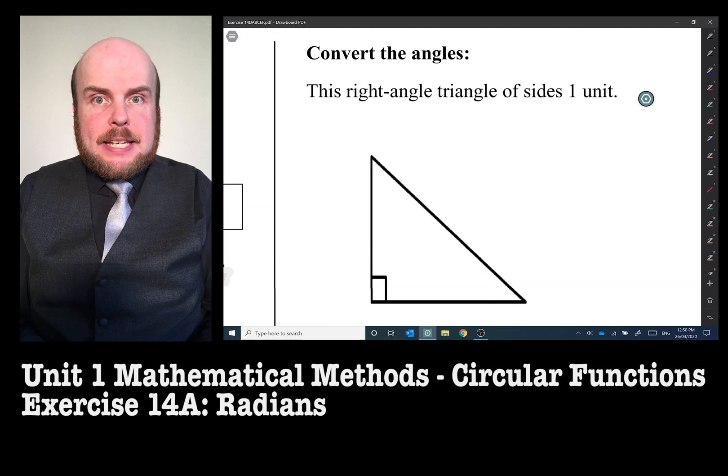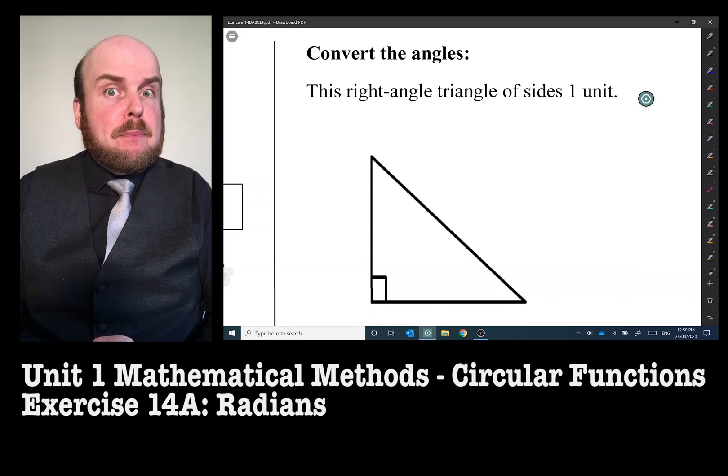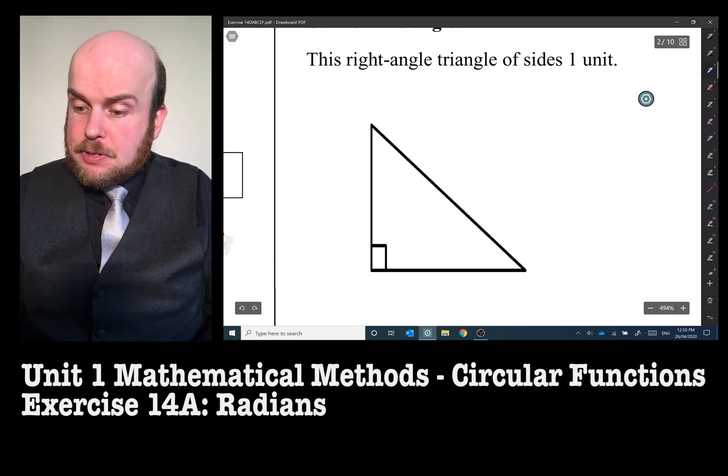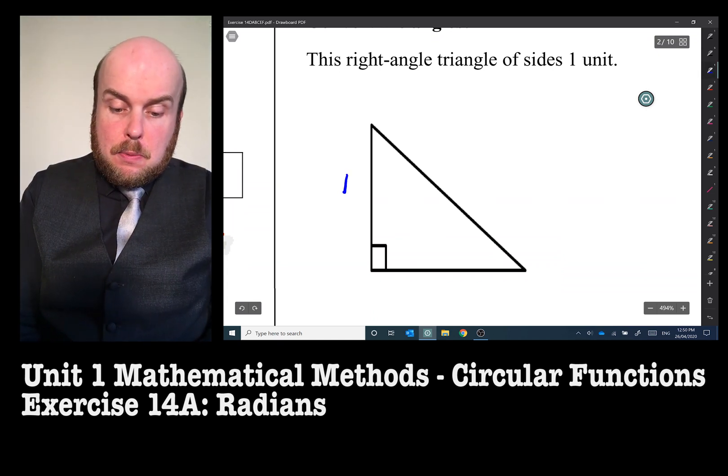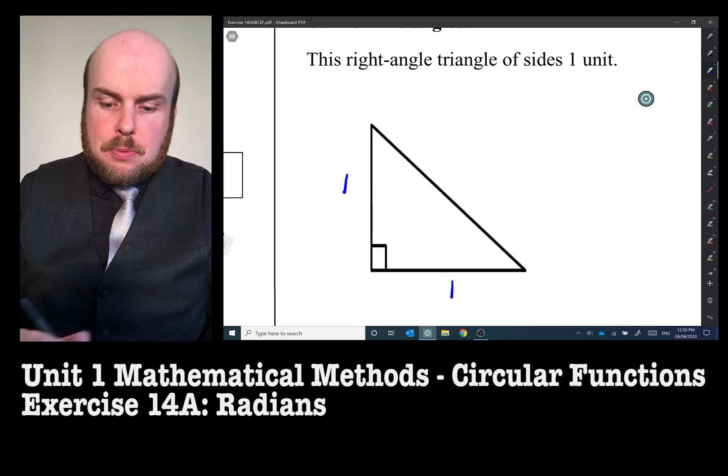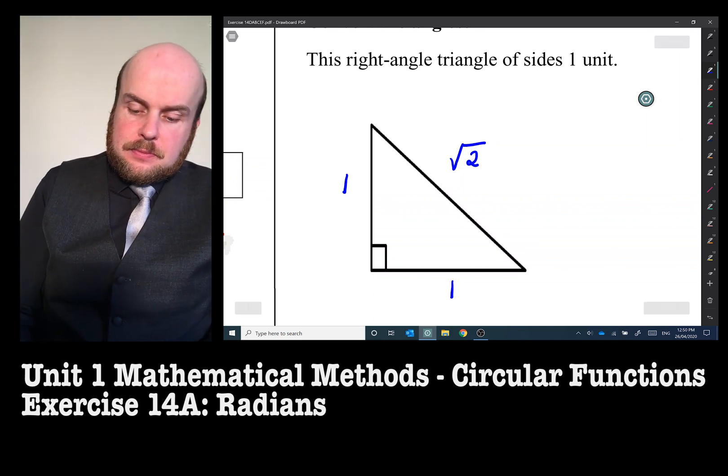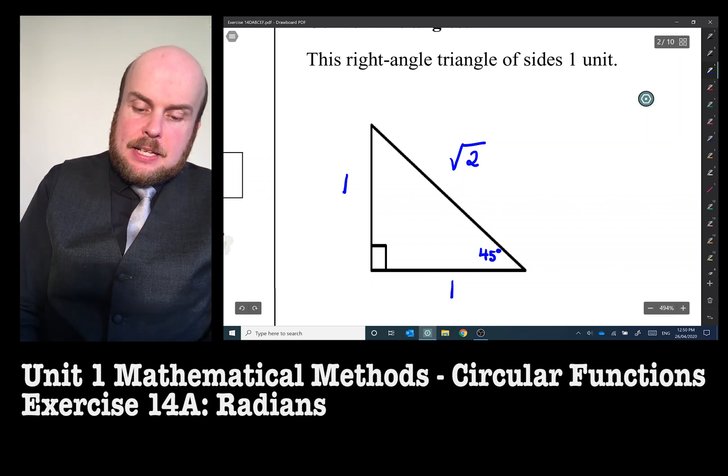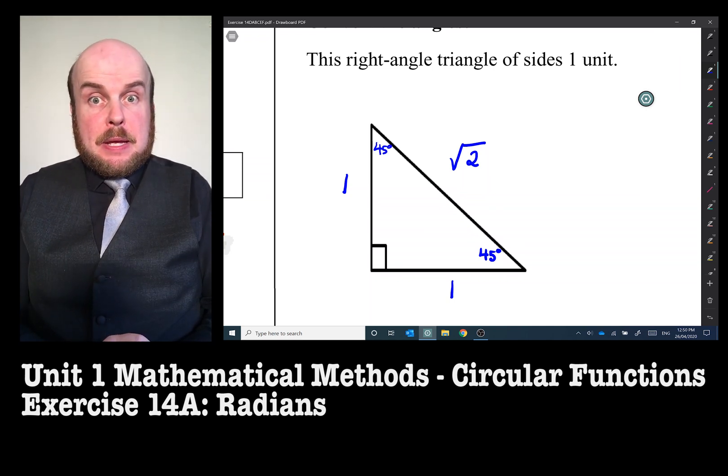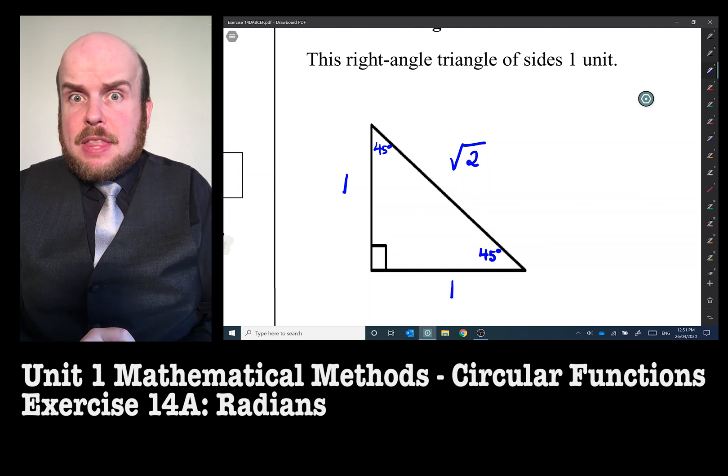Now we've got our right angle triangles. I have extracted that same right angle triangle that we dealt with in the previous video, which was made from a square. This particular triangle has a height of one unit and a base of one unit, and using Pythagoras we're able to identify that the hypotenuse is root two. We were able to identify that the angles in here are 45 degrees, because it's half of a square.